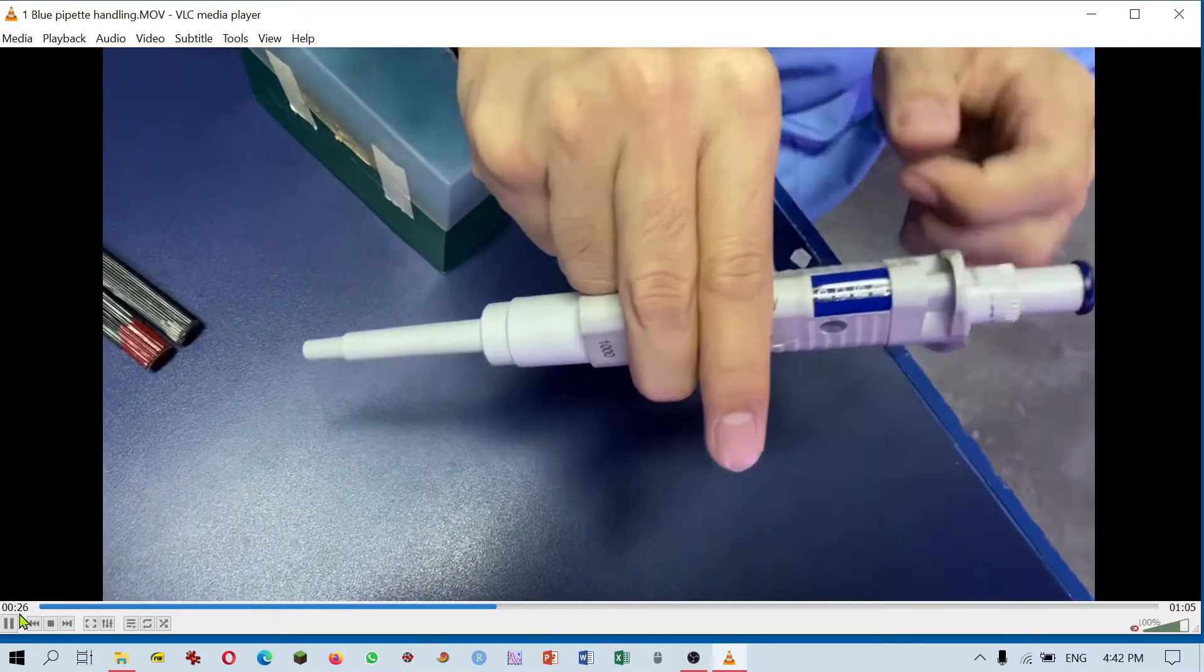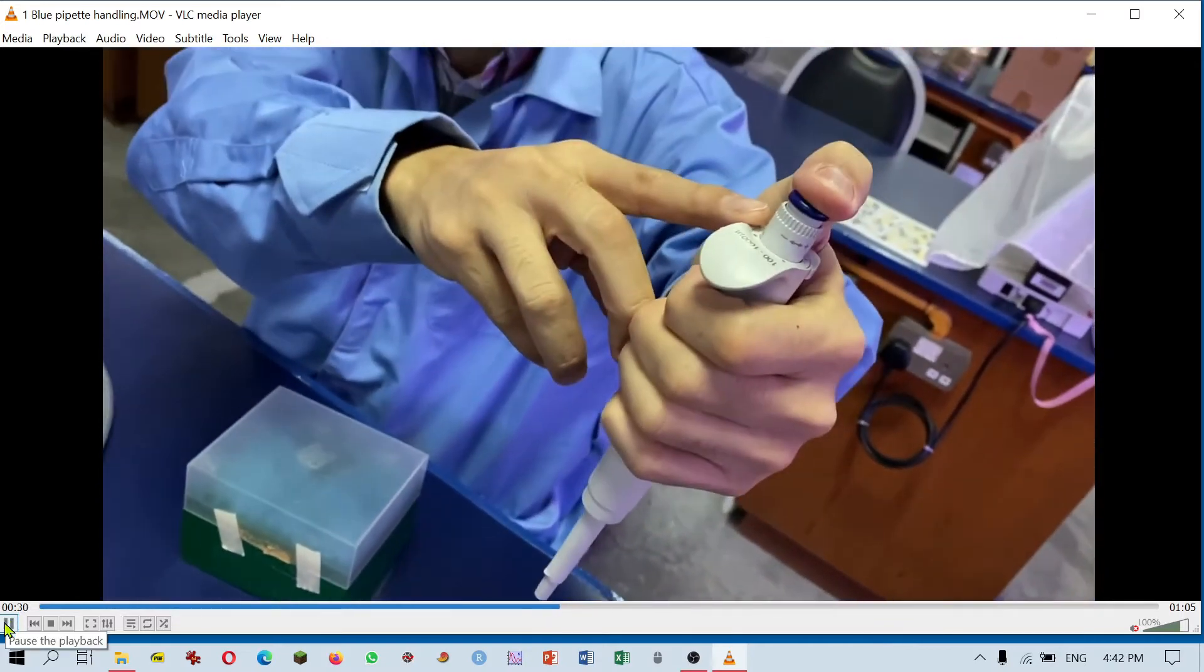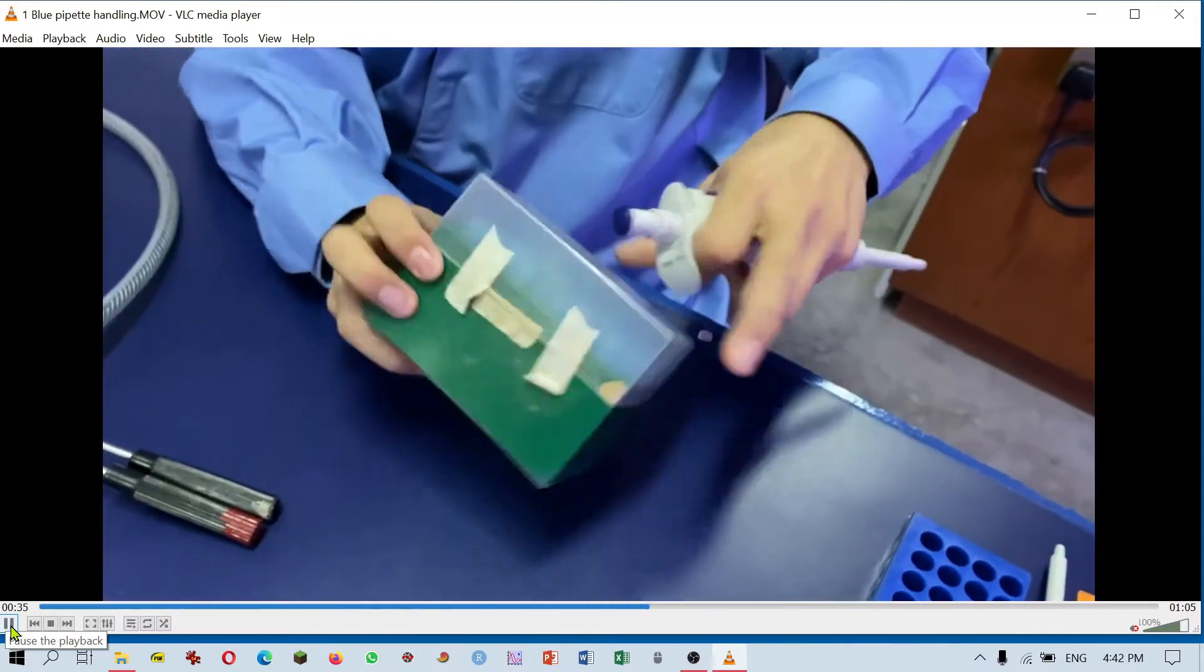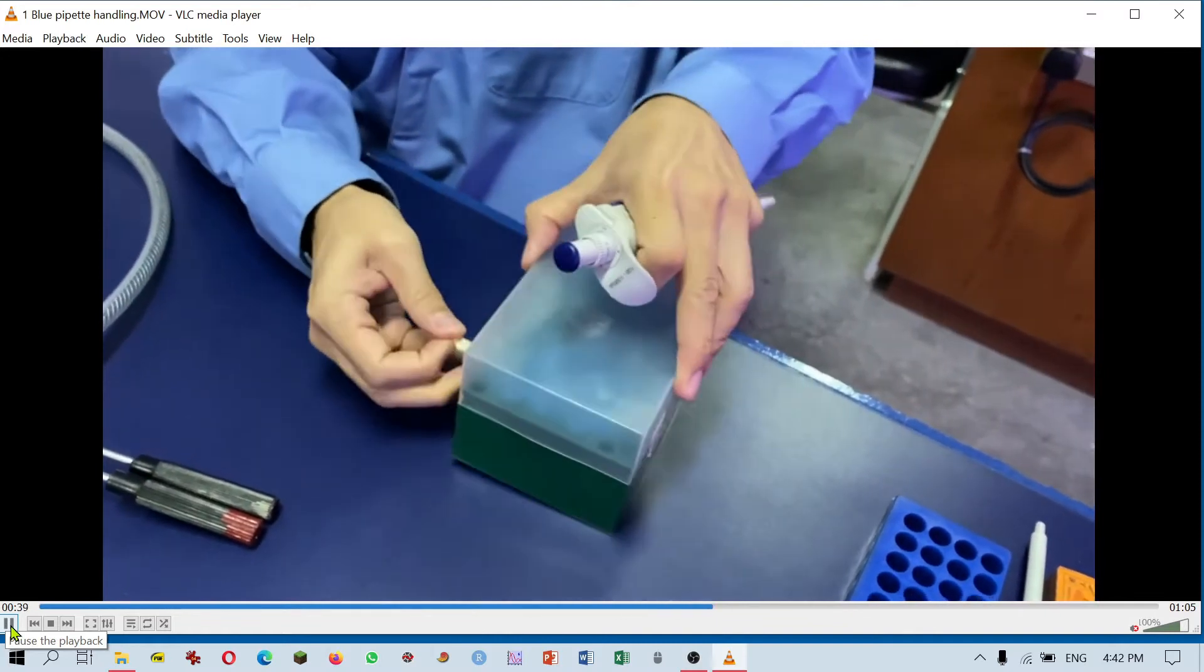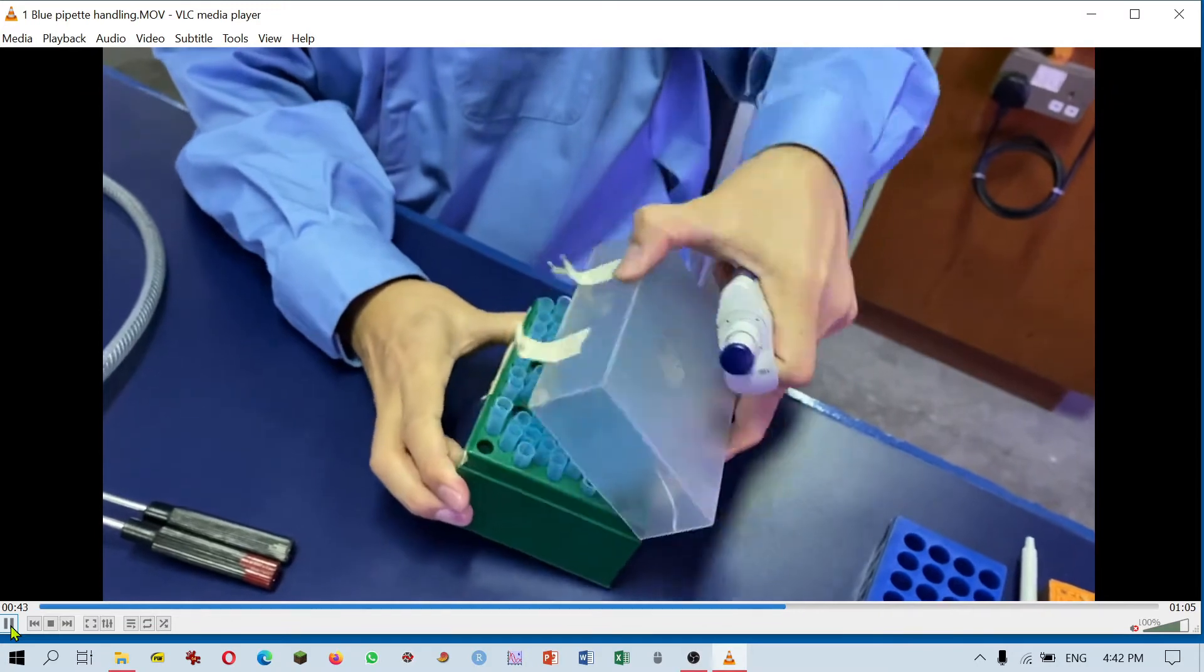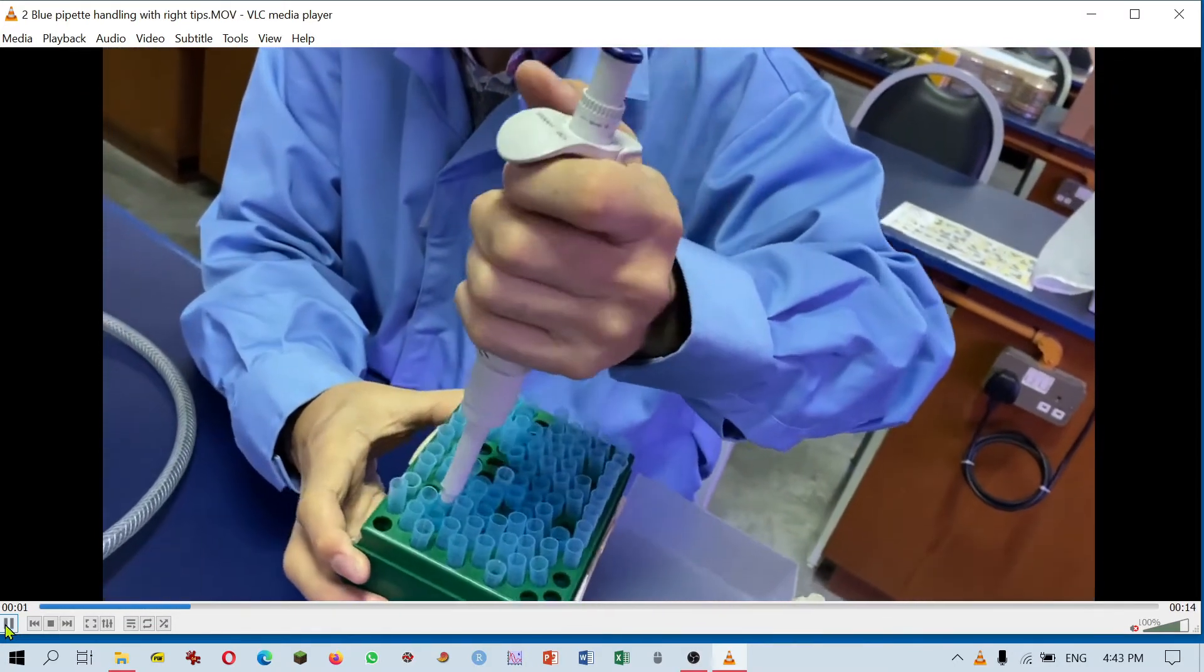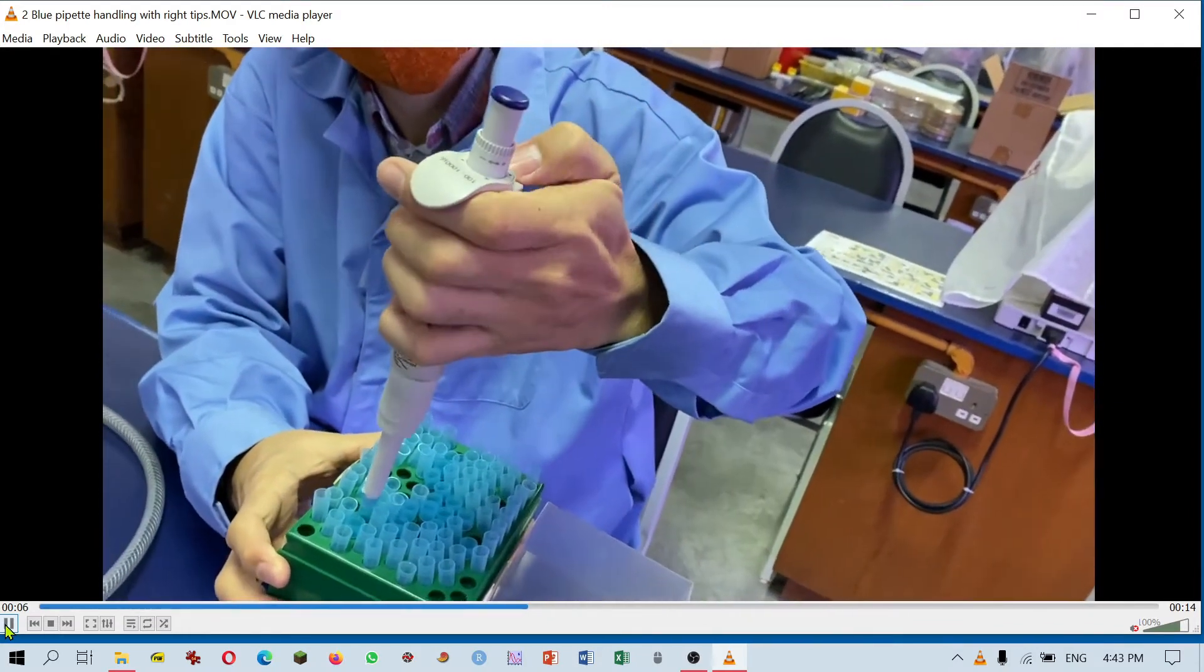This shows 900 microliters. This is how you aspirate and dispense the solution using the blue pipette. Here are the blue tips you can use to aspirate your solution and press the button at the back to eject it.